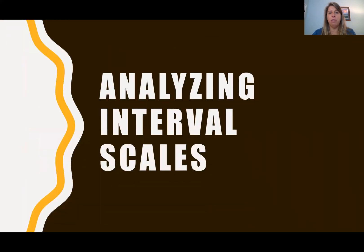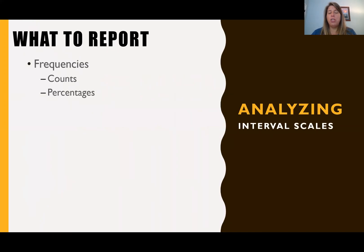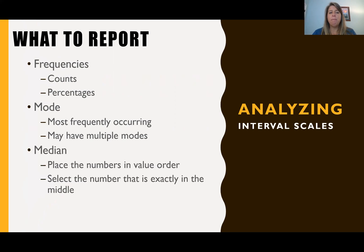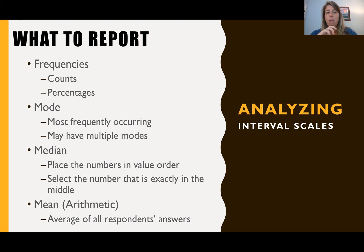So how do you analyze interval scales? Just like nominal scales, you can report frequencies as either counts or percentages. Just like nominal scales, you can report the mode, which is just the most frequently occurring value — and you could have multiple modes depending on how many categories you have. Just like ordinal scales, you can report the median, which is where you put all the answers in value order and find the one exactly in the middle. Unlike ordinal and nominal scales, interval scales allow you to calculate a mean — which is just the average of all respondents' answers. You simply add up their answers and divide by how many cases you have.